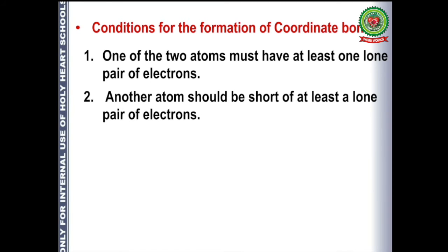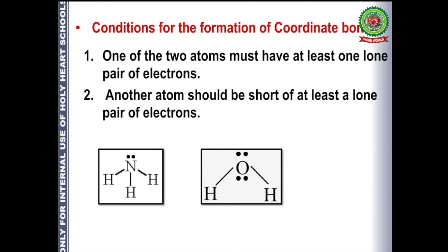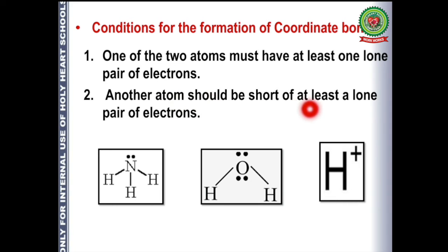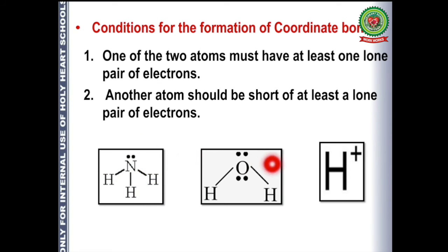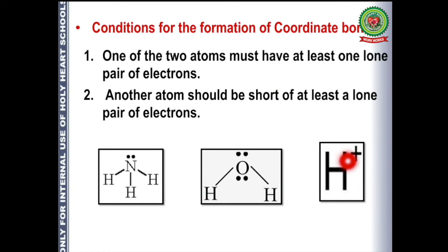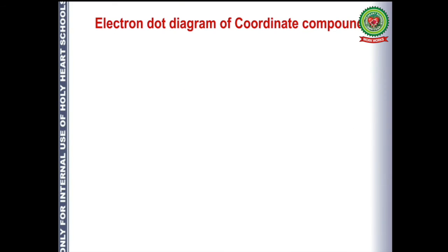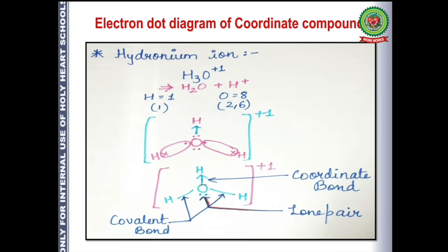The second condition is that another atom should be short of at least a lone pair of electrons. So there should be a molecule which is electron rich and an atom which is electron deficient — only then will the electron rich atom donate its lone pair to the electron deficient atom. Now let us do some electron dot diagrams that are important.